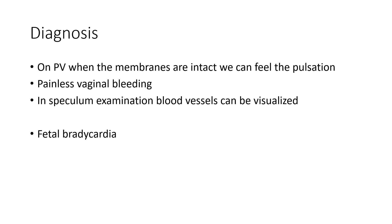Now let us see how to diagnose Vasa Previa. On per-vaginal examination, if the membranes are intact — if the amnion and chorion are not ruptured — you will be able to feel a pulsation when doing palpation. Painless vaginal bleeding is present; in that case you should suspect Vasa Previa. On speculum examination, you will be able to visualize the blood vessels. Fetal bradycardia will also be present.